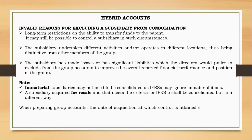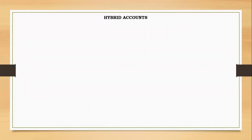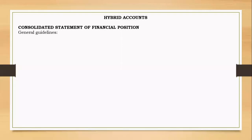When preparing group accounts, the date of acquisition at which control is attained should be noted, and goodwill is computed as per IFRS 3 at that stage. We will take a deeper look into this step by step, working through examples of how to consolidate financial statements.